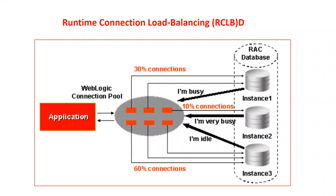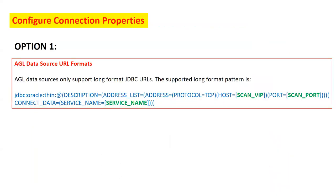The runtime connection load balancing diagram shows a backend RAC cluster with three instances. When an application requests a connection from the pool, the Active Grid Link data source checks the status of all running instances. If instance one and instance two are busy while instance three is idle, the Active Grid Link data source sends the connection request to instance three. For example, instance one may be at 40% connections and instance two at 60%, and the data source actively checks this at runtime and diverts application requests to the best available database instance.